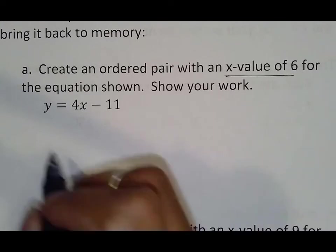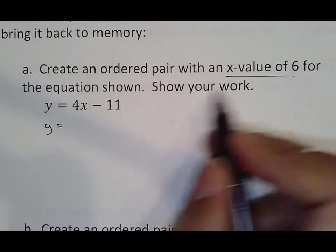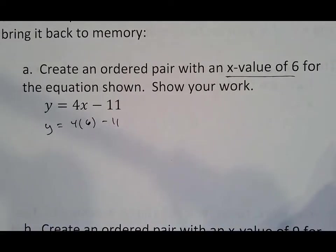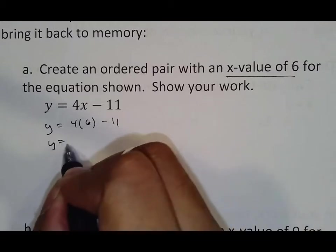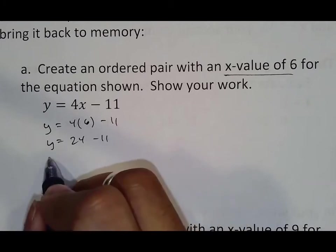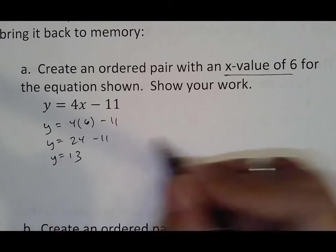And it wanted you to show your work, so what you did was put y equals, remember if that's 6, then you wanted to put the 6 in there. So 4 parenthesis 6 minus 11, which then becomes y equals 24, because again you do multiplication first, minus 11, and then 24 minus 11 is 13.